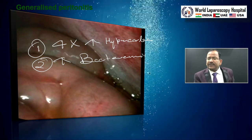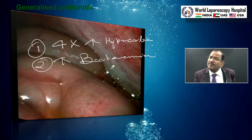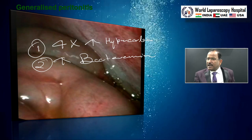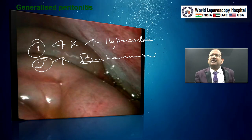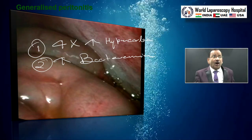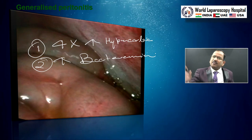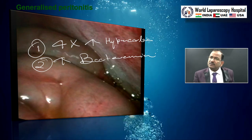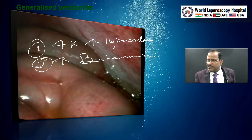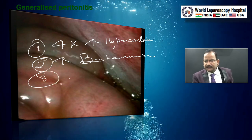Even if the duodenum is perforated, in the first 24 hours it is a sterile peritonitis because the duodenum does not have bacteria — so it is chemical peritonitis. After that, gram positive bacteria start, then gram negative, then anaerobic. All those bacteria, if you are putting CO2, are pushed into the bloodstream. So the patient who already has leukocytosis and bacteremia will go into septicemia — that is the third problem of generalized peritonitis.